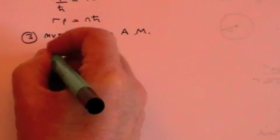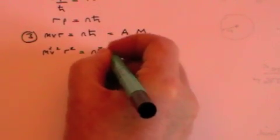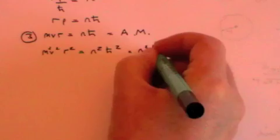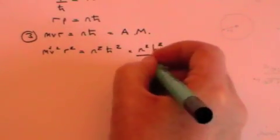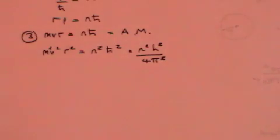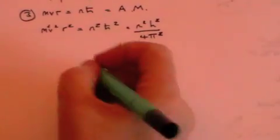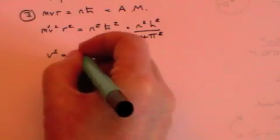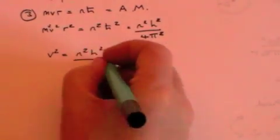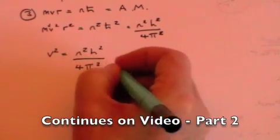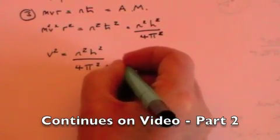So now, let's proceed. We can write that M squared V squared R squared equals N squared h bar squared, which is N squared h squared over 4 pi squared, since h bar is h over 2 pi. V squared, which is the velocity squared, is N squared h squared divided by 4 pi squared M squared R squared.